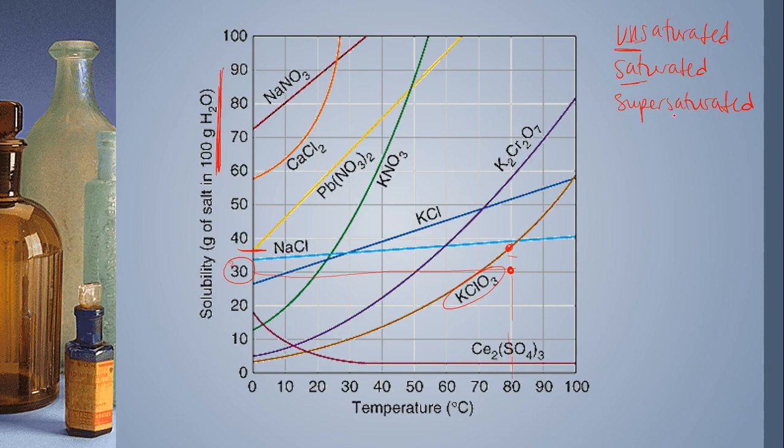So how do you get supersaturated? Think about super, like superscript. It has to be above it. So if you plotted a point that was here, let's say we had 50 grams of KClO3 in 80 degrees Celsius water, 100 grams of water, that would be supersaturated because it's only supposed to dissolve 37. And if it's dissolved 50, well, then that's more than what we should be able to dissolve.